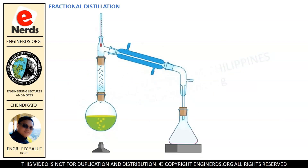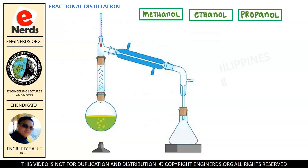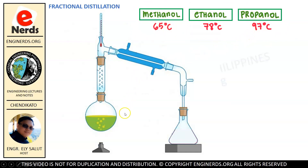So let us go to our setup for fractional distillation. Our solution contains methanol, ethanol, and propanol. In order to understand what we're going to do, let me write the boiling point of each liquid. Methanol has a boiling point of 65 degrees Celsius, ethanol 78 degrees Celsius, and propanol 97 degrees Celsius. These details are very important in order for our fractional distillation to work properly.